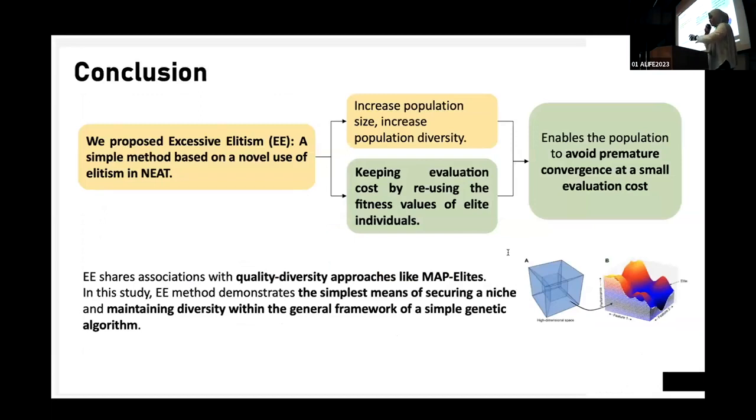As the conclusion, we proposed this method to improve the evolution of creatures by increasing the population diversity and enables the population to avoid premature convergence at a small evaluation cost. Additionally, our method shares a little association with the quality diversity approach like map elites, which captures diverse high-performing solutions by partitioning the search space. In this study, EE method, our method, demonstrates the simplest means of securing a niche and maintaining diversity within general framework of simple algorithm.